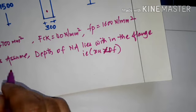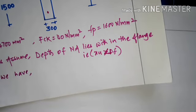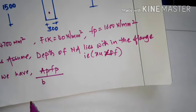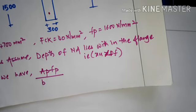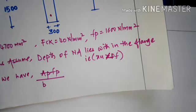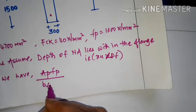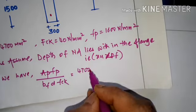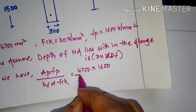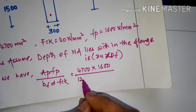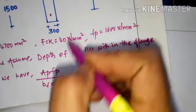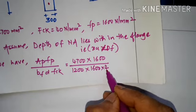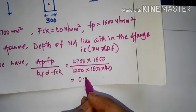With neutral axis within the flange, the effective reinforcement ratio = AP × FP / (BF × D × FCK) = (4700 × 1600) / (1200 × 1600 × 40) = 0.098.